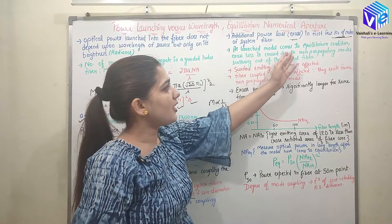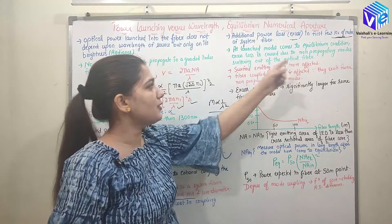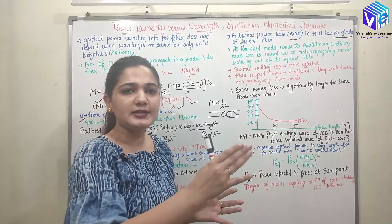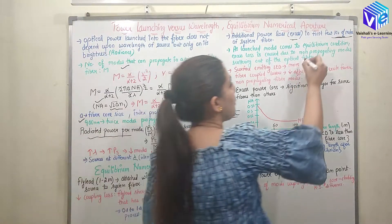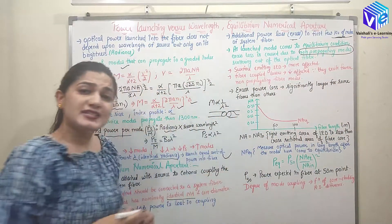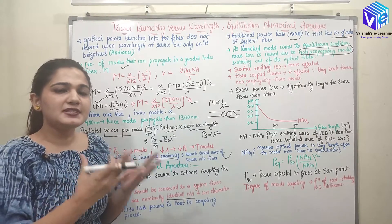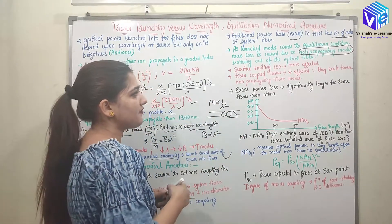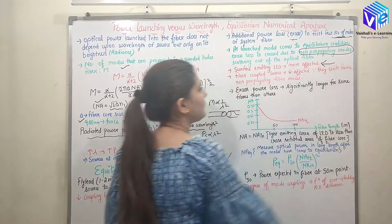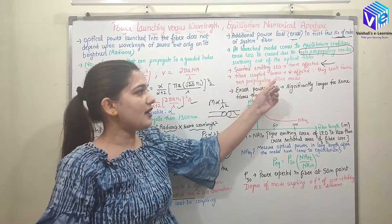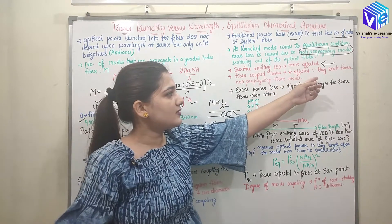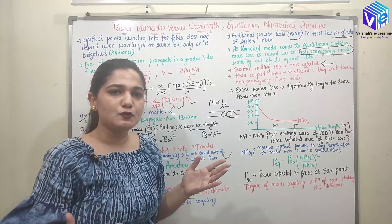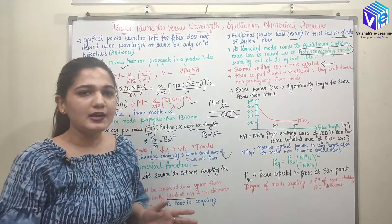As launched modes come to equilibrium, excess loss is caused by non-propagating modes scattering out of the optical fiber. In the first tens of meters, non-propagating modes scatter out, affecting the numerical aperture. Surface-emitting LEDs are more affected because they have more non-propagating modes, while fiber-coupled lasers are least affected because there are fewer non-propagating fiber modes. Therefore, LEDs have higher losses than lasers.